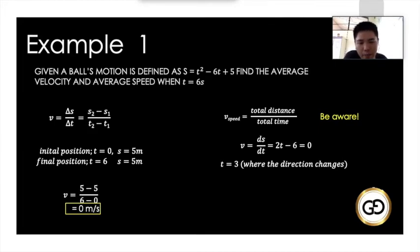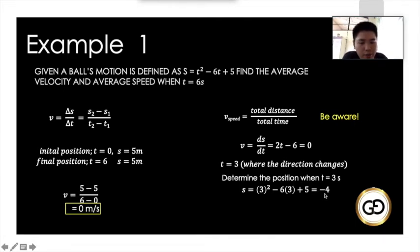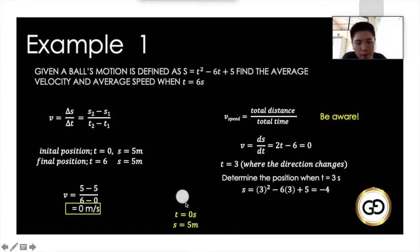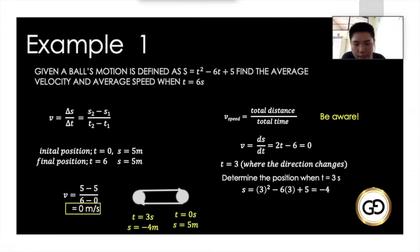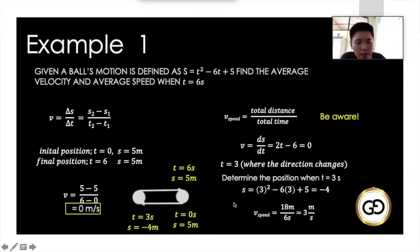We evaluate positions at t = 0, t = 3, and t = 6 s. At t = 3, s = -4 m. Illustrating the motion: at t = 0 the ball is at 5 m; it moves left to -4 m at t = 3, a distance of 9 m. Then it moves back right to 5 m at t = 6, another 9 m. Total distance = 9 + 9 = 18 m. Average speed = 18 / 6 = 3 m/s.